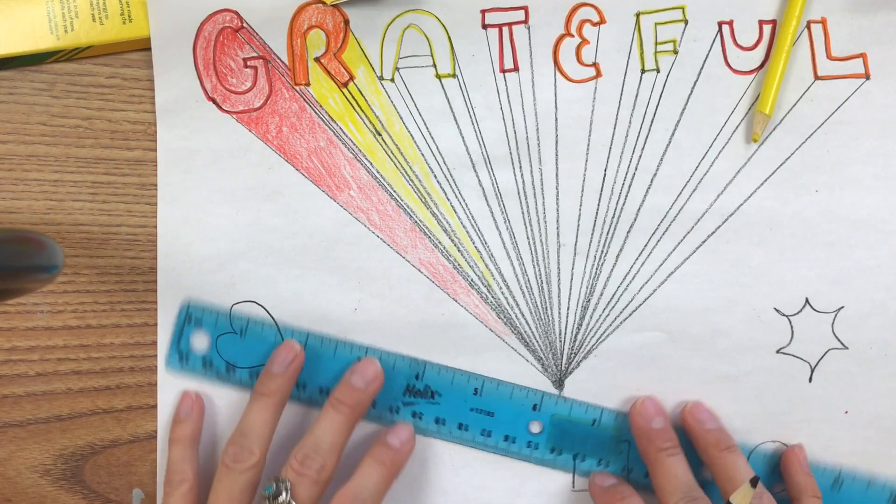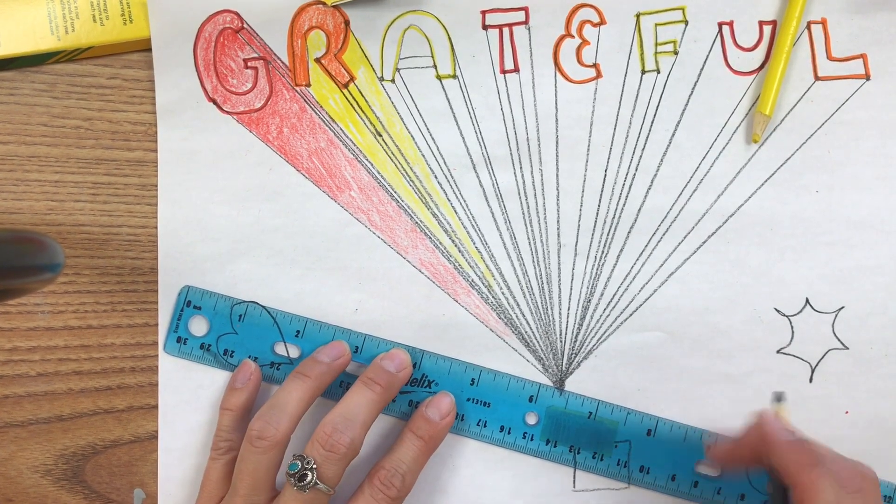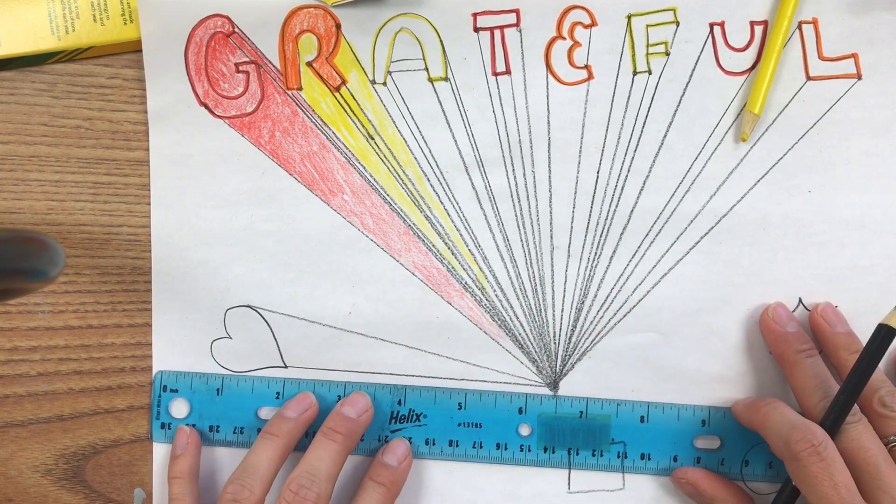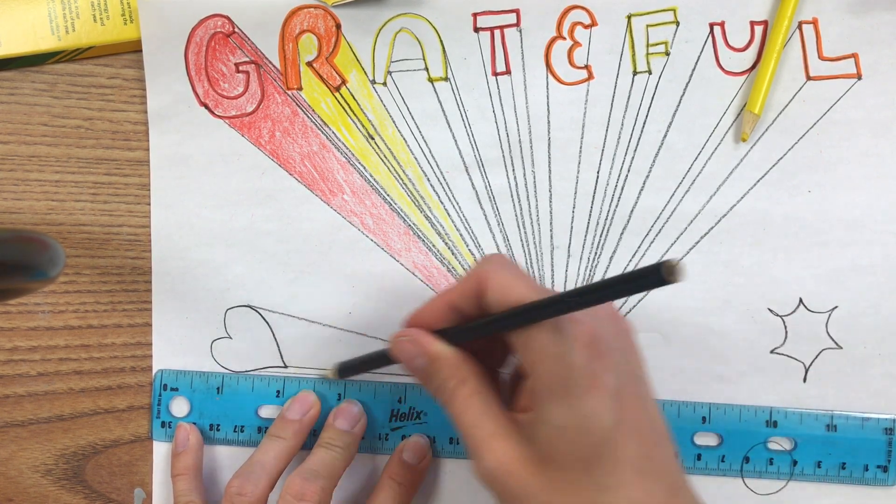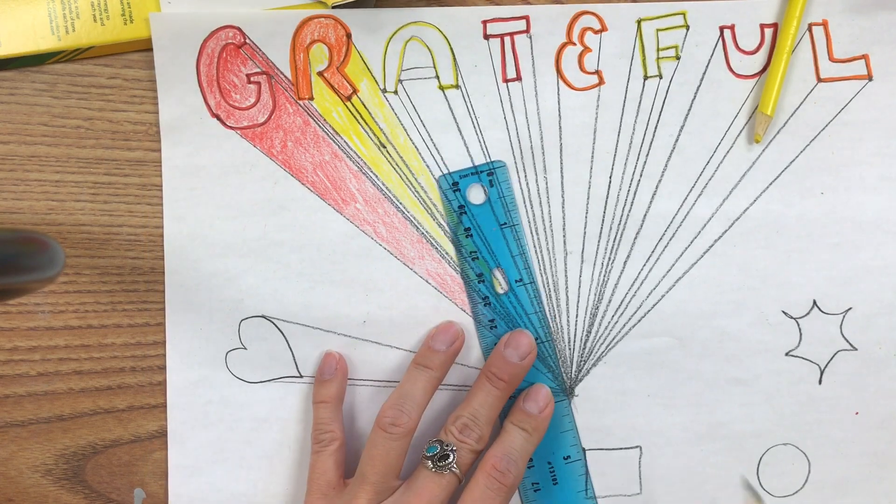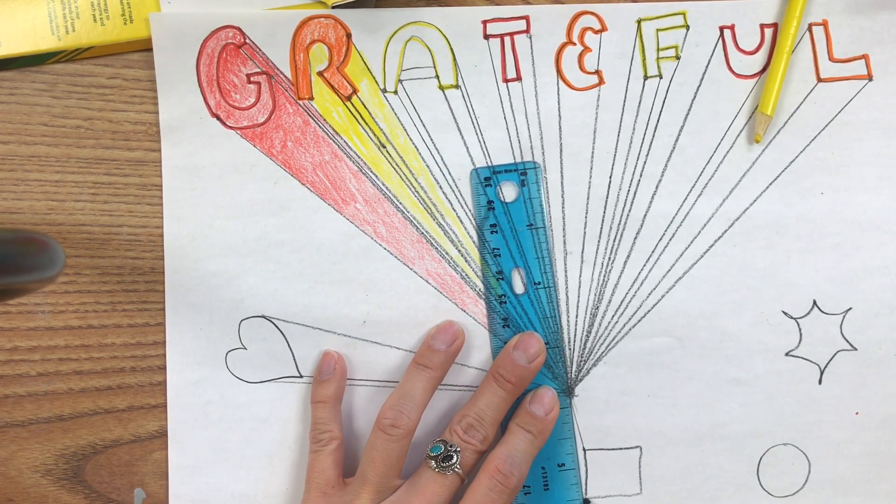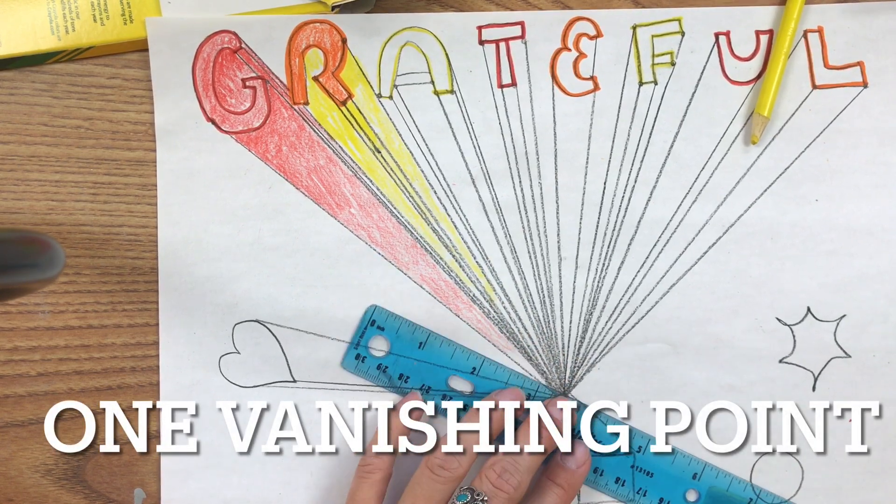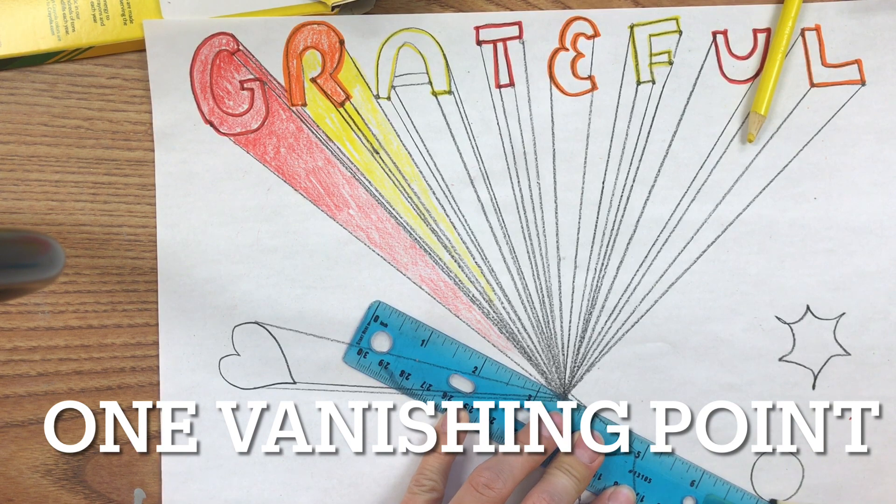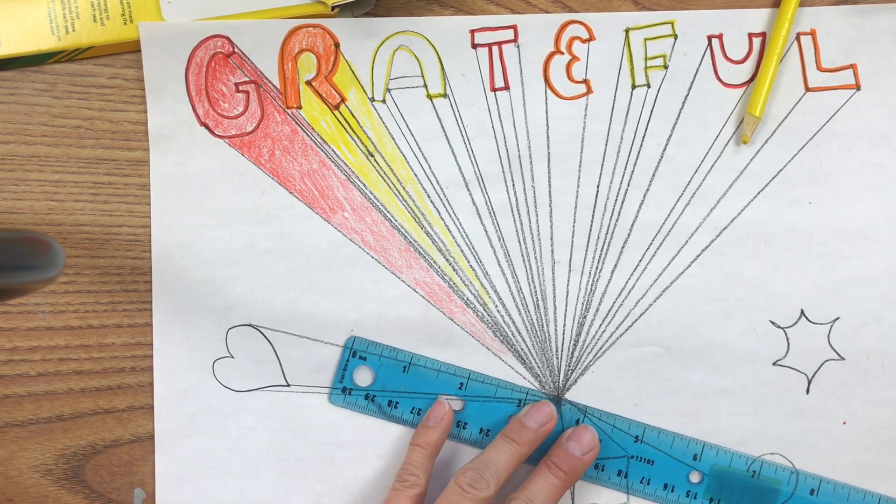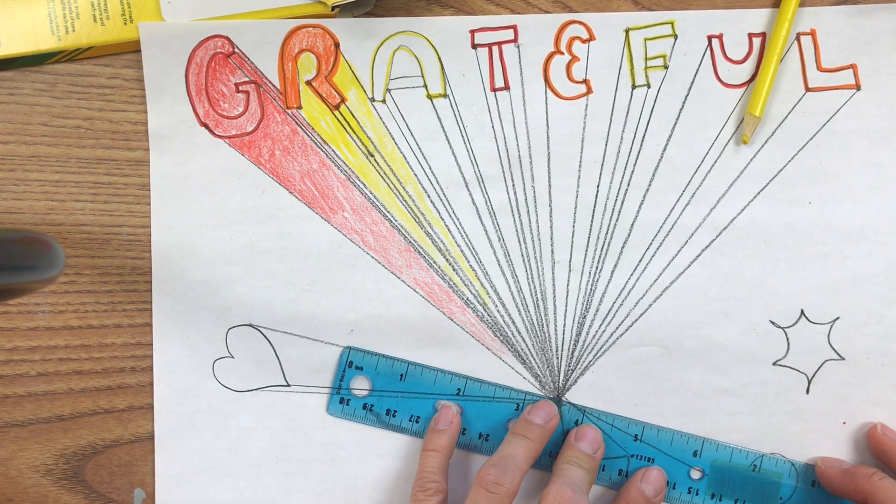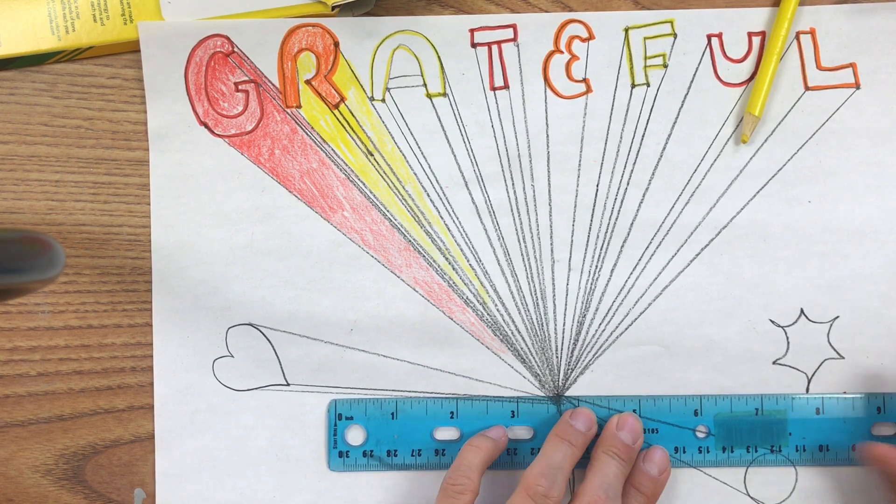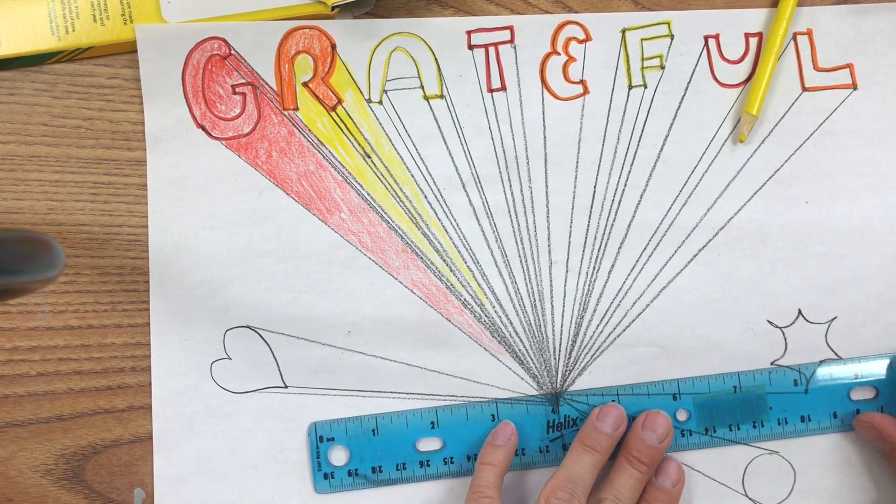I want to show you one more thing in case you finish before other people or you want to add a little bit of pizazz to your word picture. You can create shapes down here below. You're going to connect all of the edges of those shapes to the vanishing point. There's only one vanishing point in this picture. It's called one point perspective, so there's only one vanishing point.